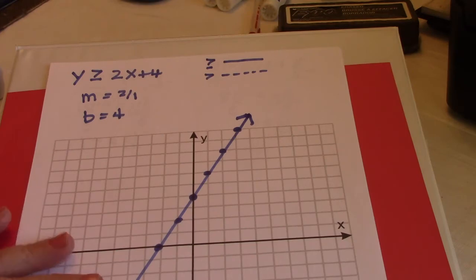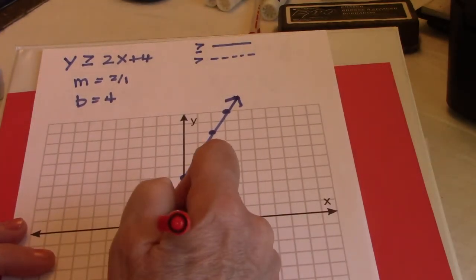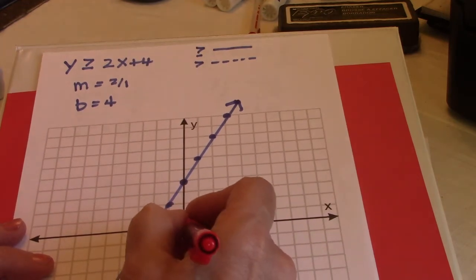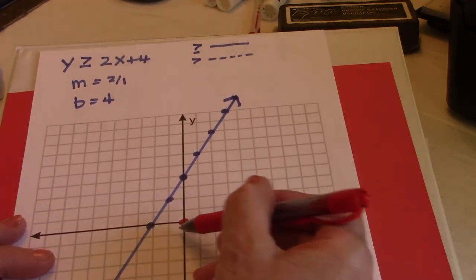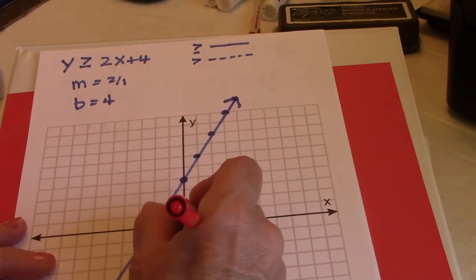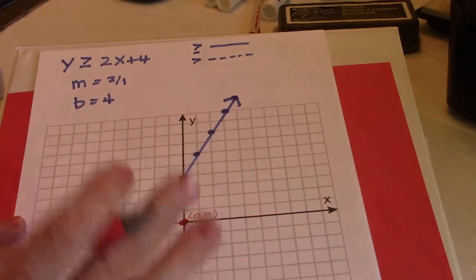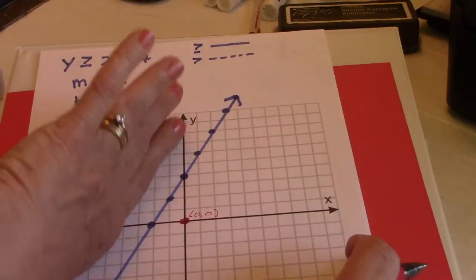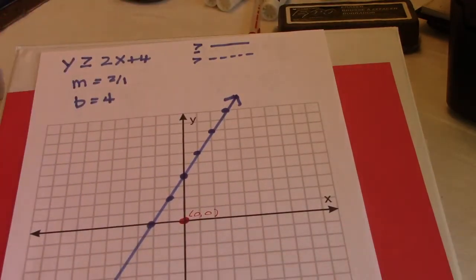This is the part where you have to just pay attention a little bit. We're going to pick a test point. I want to see if this point, which is so easy to input, does the point make it true? If it does, I won't include that in my graph. If it doesn't, I won't include that point in my graph.